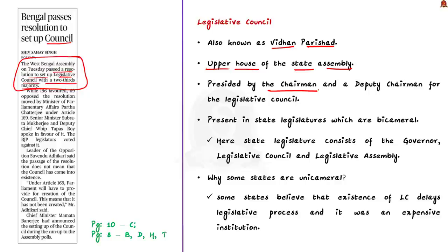But there is no uniformity in the organization of state legislatures. Some are unicameral, meaning that they have only the legislative assembly. Whereas some states are bicameral, meaning that they have both the legislative assembly as well as the legislative council. Therefore, in the states that have a bicameral system, the state legislature consists of the governor, legislative council, and legislative assembly.